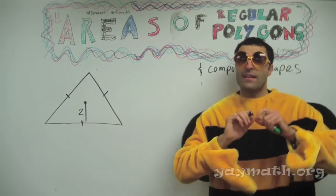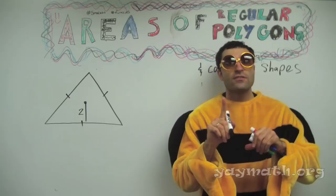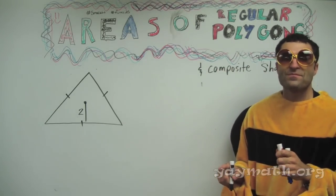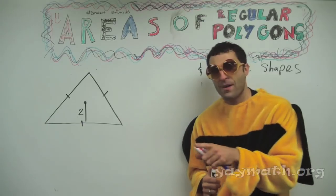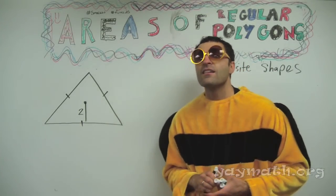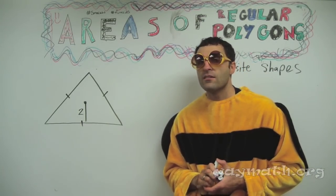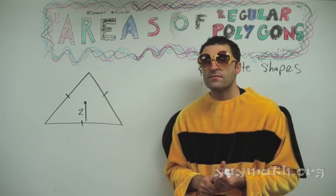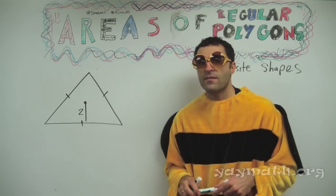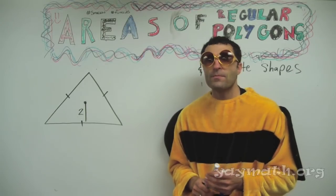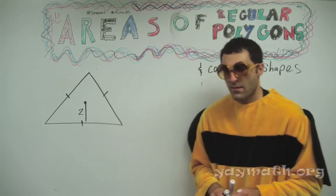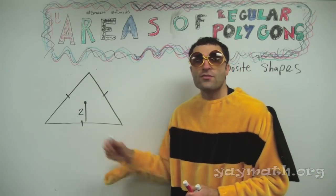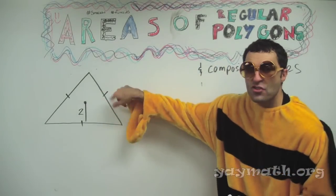Radius? That would be if it's a circle — it's not a circle. Is it the midpoint? Half of the altitude? Apothem! The apothem is given. So we want the area of this triangle.